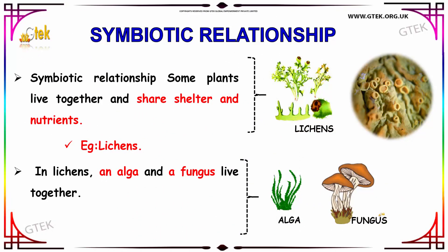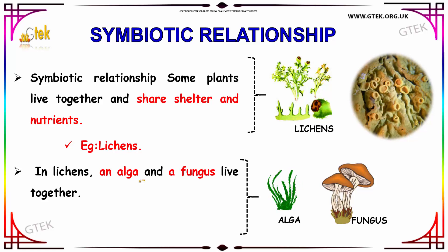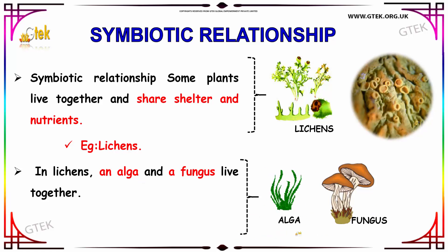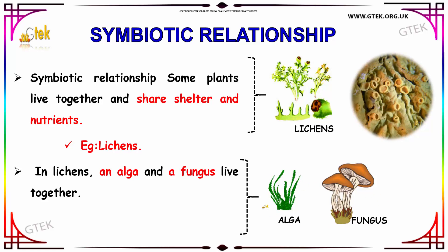Now we are going to see about the symbiotic relationship. In some plants, organisms live together and share shelter and nutrients. An example is lichens — in lichens, an alga and a fungus live together, as depicted here.